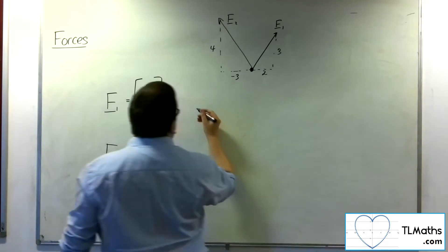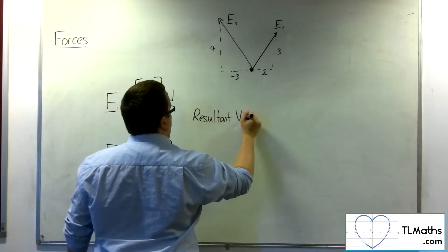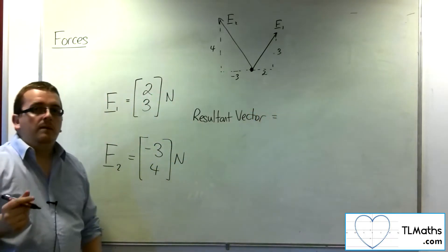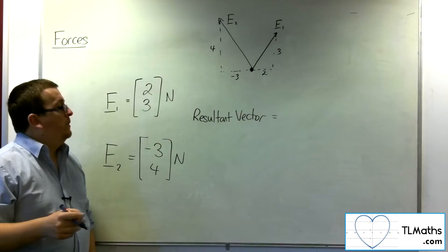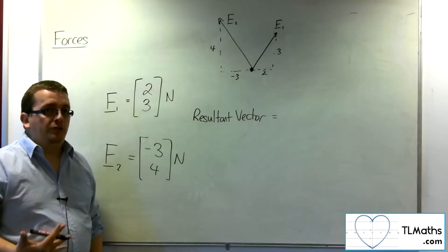Well, this is found by getting the resultant vector. Now, that sounds quite complicated, but really it isn't. The resultant vector is just the sum of the two vectors.